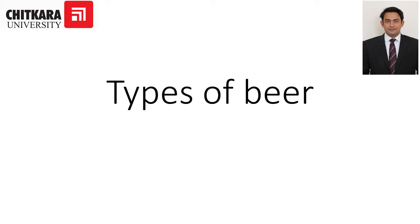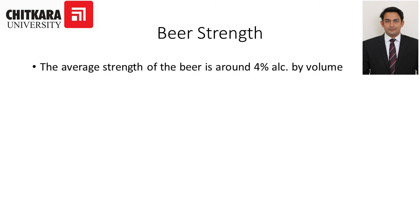Beer strength — when we say beer strength, what does this mean? The average strength of beer is around 4% alcohol by volume, meaning a particular beer bottle will have around 4% ethyl alcohol. Apart from 4%, there are beer bottles where you will find 11% alcohol by volume. So this strength ranges from 4% to 11%, and there are exceptions also, with beer of 70% alcohol by volume.